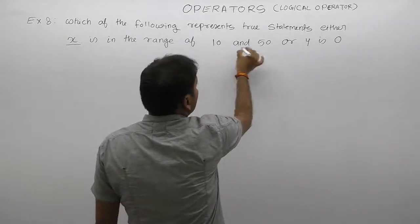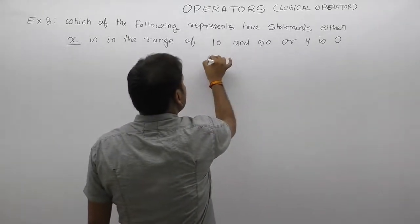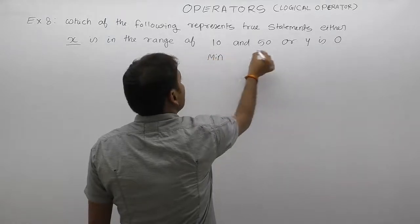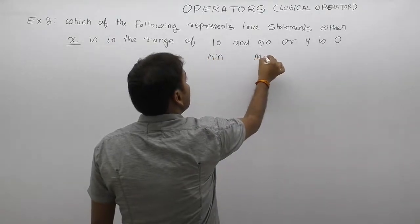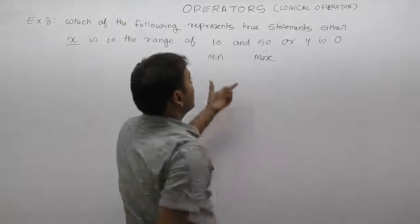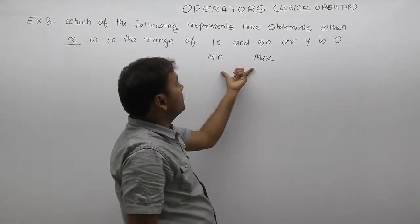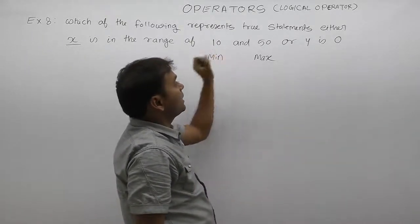x is in the range of 10 and 50. 10 means minimum range, 50 is maximum range. According to that case, x range: what is the minimum value of x? 10. What